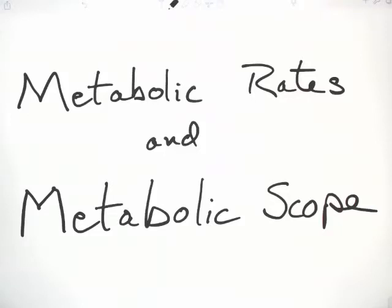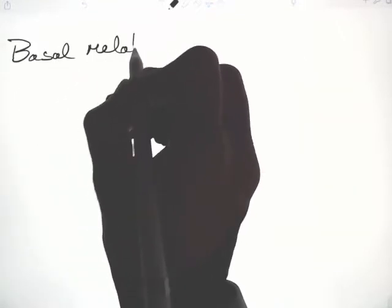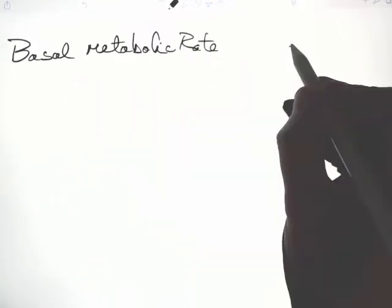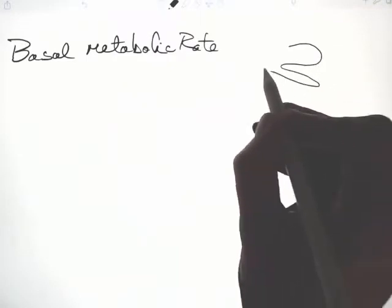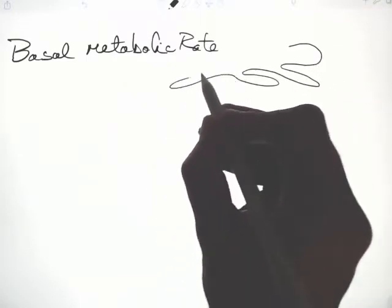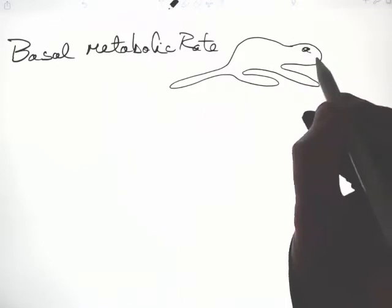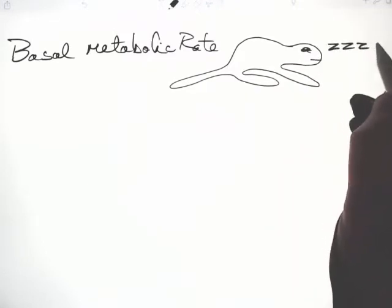There are four major aspects of metabolic rate that I want you to know. Basal metabolic rate is metabolic rate when an individual animal is at rest and doing no work. That would be equivalent to a human sleeping.